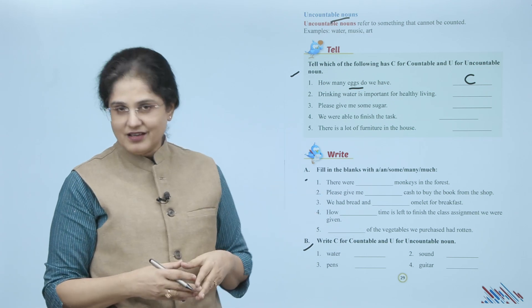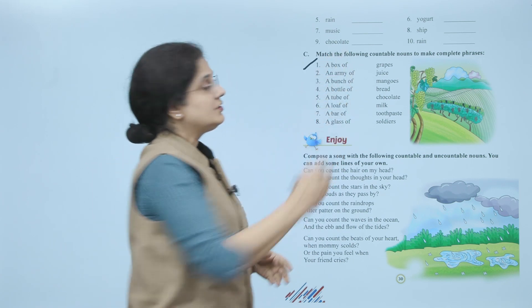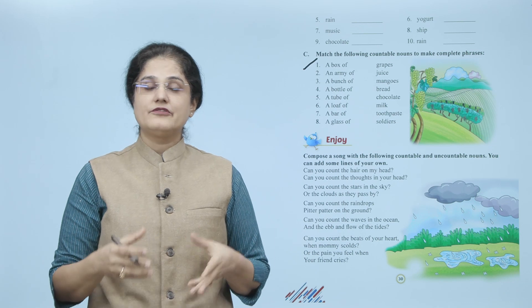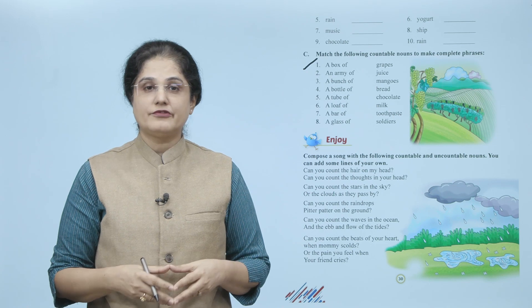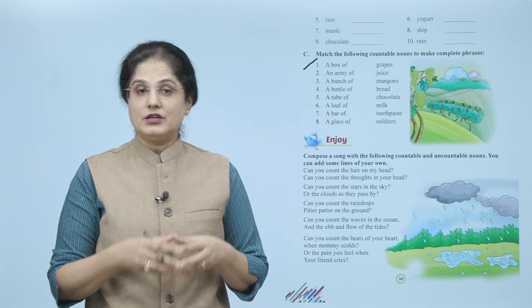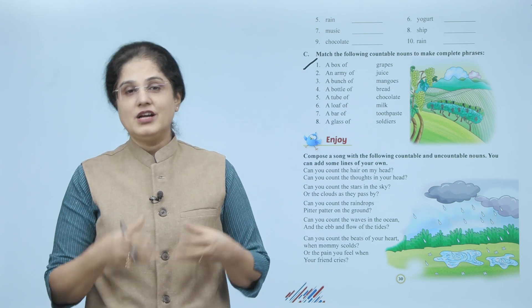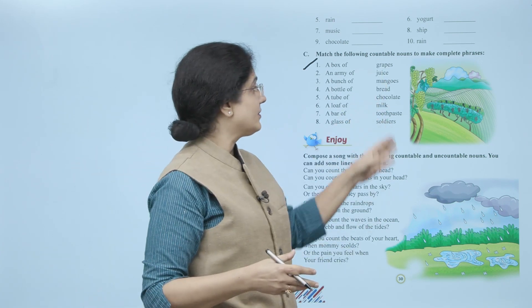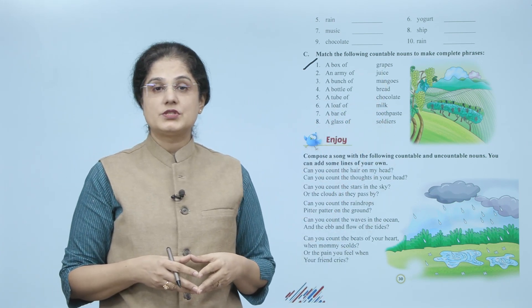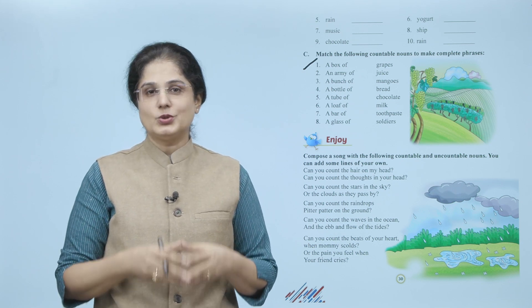Now match the following countable nouns to make complete phrases. Aap ke paas A column mein words diye gaye hain: a box of, an army of, a bunch of, a bottle of, a tube of, a loaf of, a bar of, a glass of.